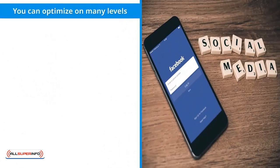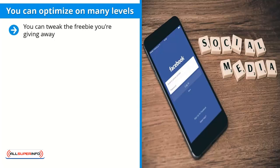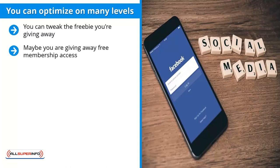You have to know how to optimize your ad campaigns on Facebook for this to make sense. There are three levels of optimization. Level one: you can tweak the freebie you're giving away — the free item that motivates people to enter their email address. This could be free membership access, a booklet, a report, a set of templates, graphics, software, or a mobile app.